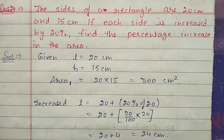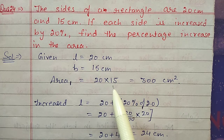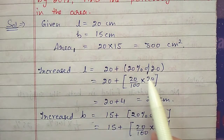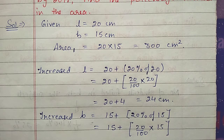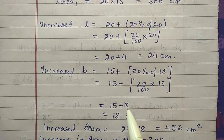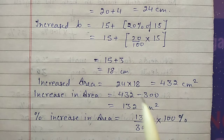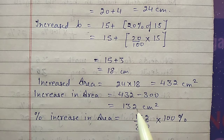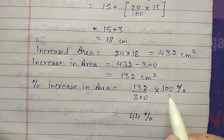Question number 24: the sides of a rectangle are 20 cm and 15 cm; if each side is increased by 20 percent, find the percentage increase in area. Original area: 20 into 15 equals 300 sq cm. After 20 percent increase: new length is 20 plus 4 equals 24 cm, new breadth is 15 plus 3 equals 18 cm. New area: 24 into 18 equals 432 sq cm. Increase in area: 432 minus 300 equals 132. Percentage increase: 132 by 300 into 100 percent equals 44 percent.